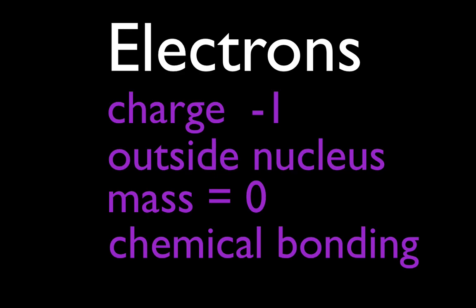Okay? So, those are kind of the four things, the charge, the location, the mass, and the importance that you should know for each of those things, the protons, the neutrons, and the electrons.